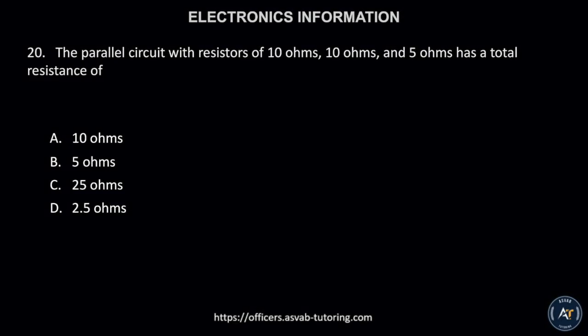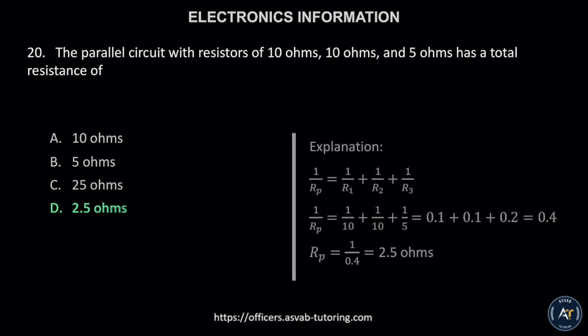Number 20. The parallel circuit with resistors of 10 ohms, 10 ohms, and 5 ohms has a total resistance of: A. 10 ohms, B. 5 ohms, C. 25 ohms, or D. 2.5 ohms? The correct answer is letter D, 2.5 ohms. The solution is shown.